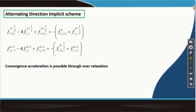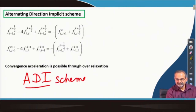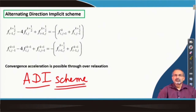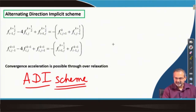We would like to discuss another very powerful algorithm for solving elliptic partial differential equations, which is called the alternating direction implicit scheme. In the literature, it is often referred to as the ADI scheme. Let us draw a simple diagram to explain what the ADI scheme essentially does.